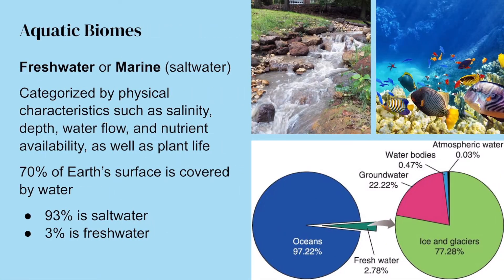Aquatic biomes are classified as either freshwater or marine. Marine means saltwater. They are categorized by physical characteristics such as salinity — which is saltiness — depth, water flow (is the water flowing quickly or slowly, or sitting there stagnant?), and also nutrient availability. Similarly to terrestrial biomes, these biomes are classified by their plant life — what plants can be supported in these different biomes.